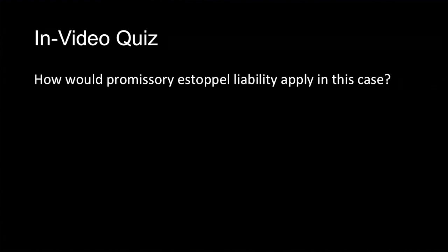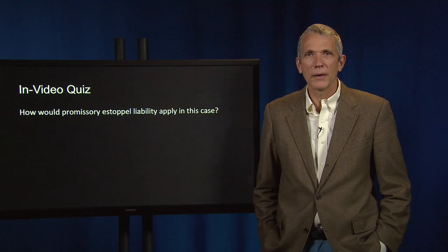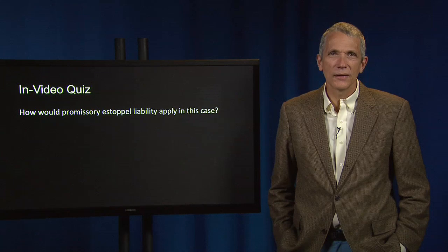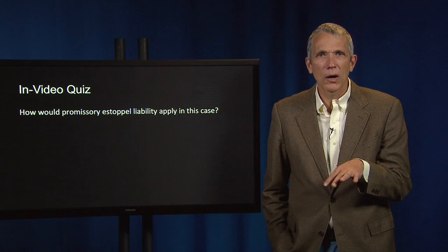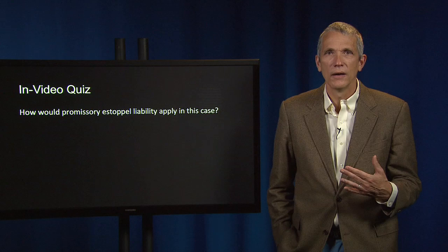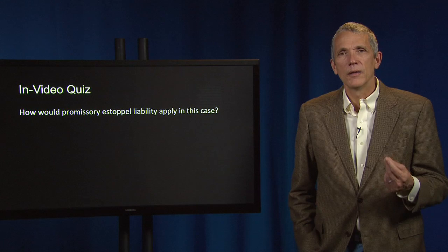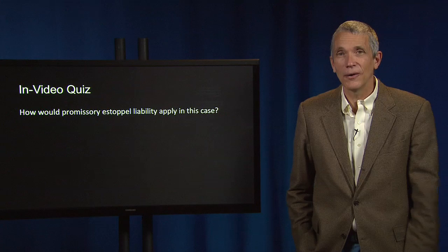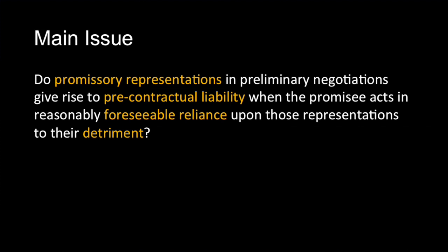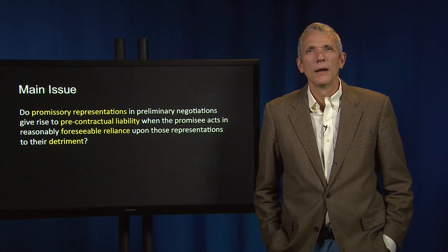How can you make an argument that promissory estoppel liability is appropriate under these alleged facts? Promissory estoppel allows for enforcing a promise, even if made without formal consideration, when the promissee relies on the promise to her detriment. In this case, the promissee was the borrower, who relied on the bank's promise to enter into modification negotiations if the borrowers would stop making their monthly payments. The borrower's reliance was to their detriment because the bank subsequently foreclosed on their home. The main issue in this case is whether promissory representations in preliminary negotiations give rise to pre-contractual liability when the promissee acts in reasonably foreseeable reliance upon those representations or promises to their detriment.